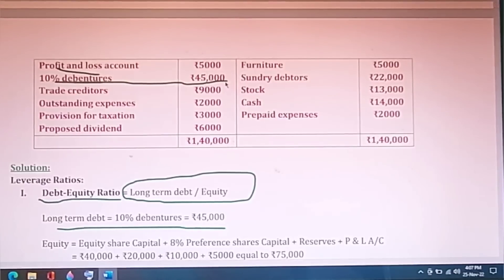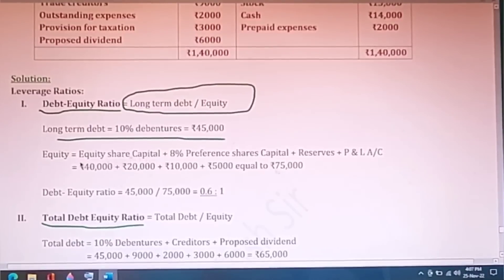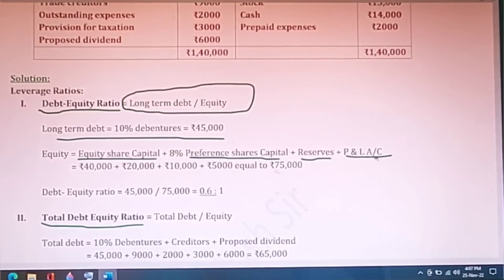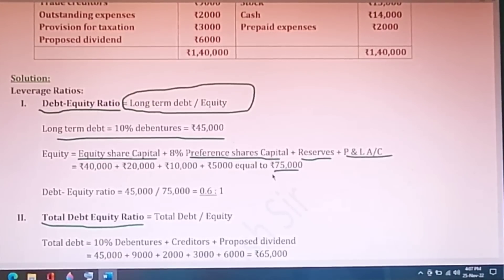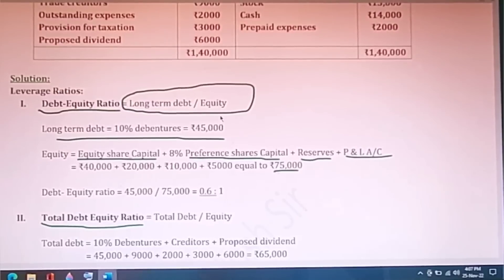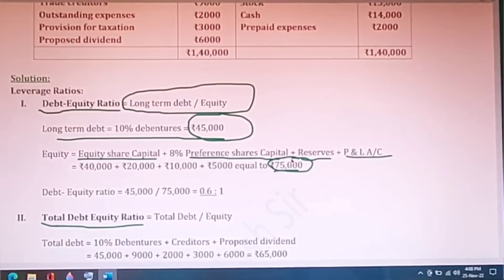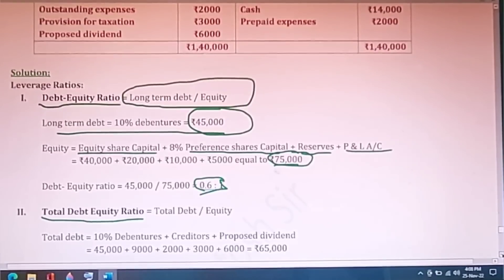Long term debt includes debentures — Rs.45,000 as given in the balance sheet. Equity includes equity share capital, preference share capital, reserves, and profit and loss account credit balance from the liability side. Debt equity ratio equals long term debt Rs.45,000 divided by total equity Rs.75,000, giving 0.6:1. For total debt equity ratio, total debt includes debentures, trade creditors, and proposed dividend totaling Rs.65,000, divided by equity Rs.75,000.